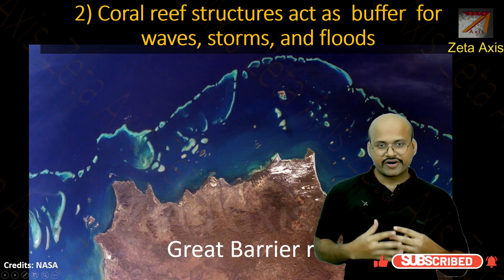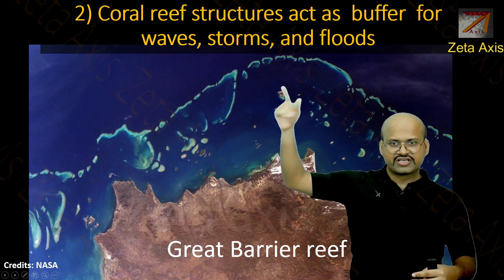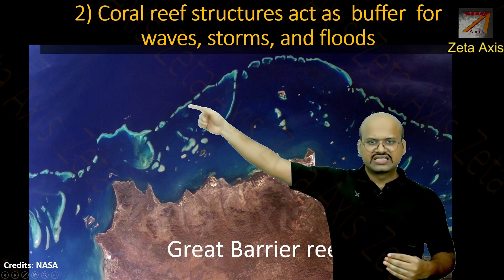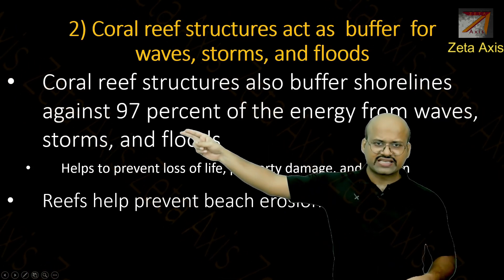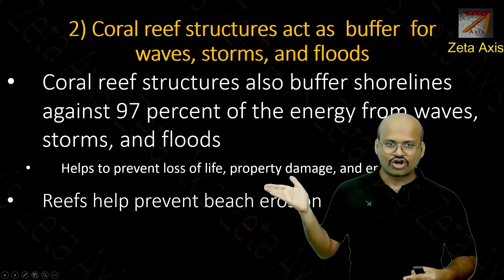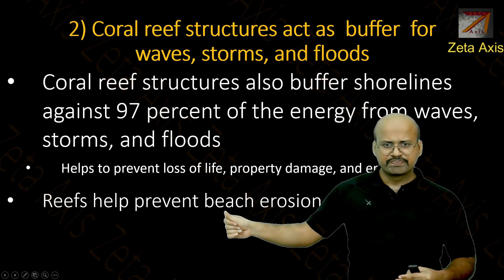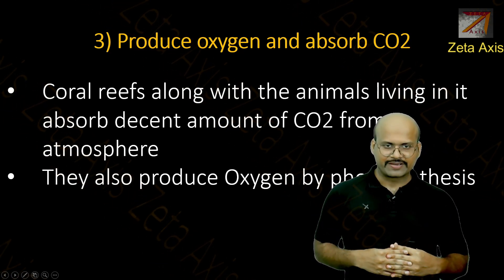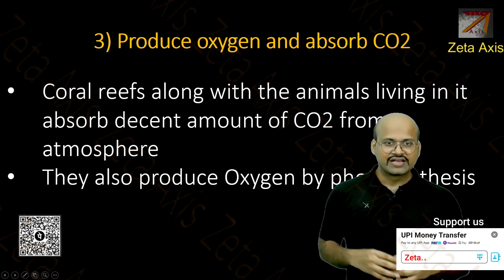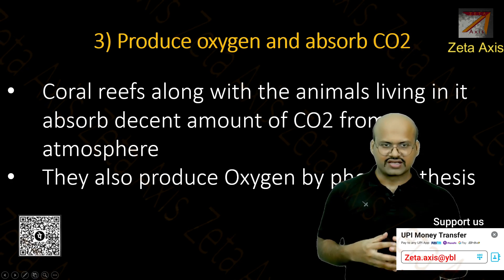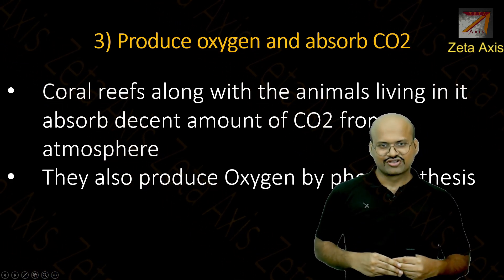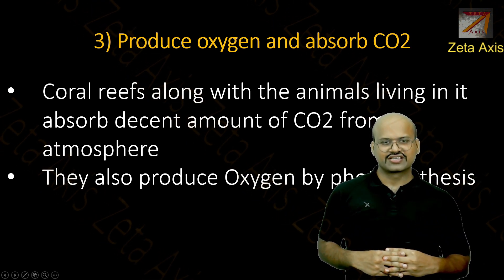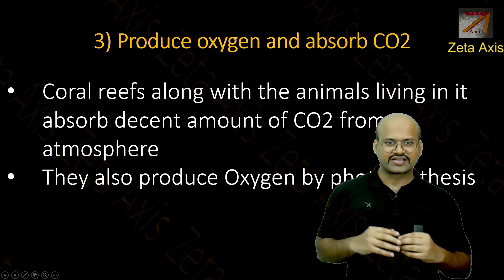Coral reefs also act as a buffer for sea waves, storms, and floods. The Great Barrier Reef along the coast of Australia, for example, can absorb as much as 97% of the energy from waves, protecting life and property in coastal regions. These reefs also help prevent beach erosion, thereby preserving beaches. Additionally, coral reefs emit large amounts of oxygen into the atmosphere and absorb carbon dioxide dissolved in the water. The zooxanthellae algae perform photosynthesis, converting CO2 into oxygen. Moreover, the various plants living within coral reefs also perform photosynthesis, increasing oxygen and decreasing carbon dioxide.